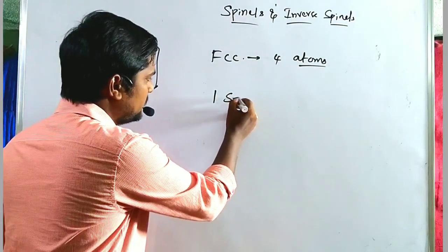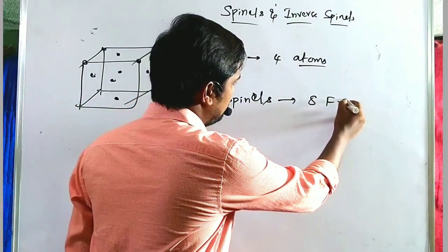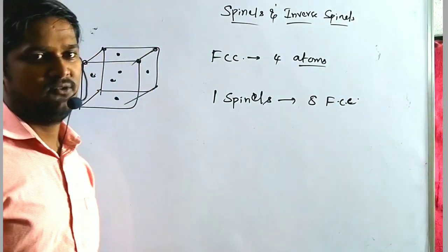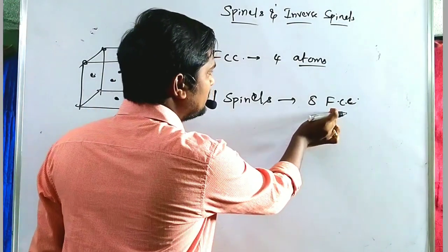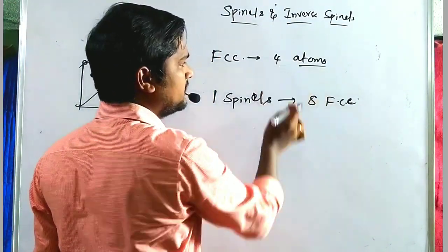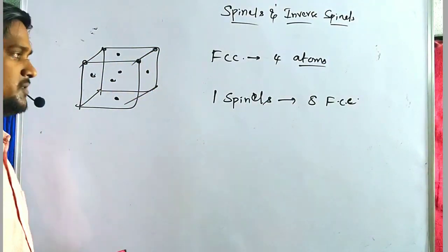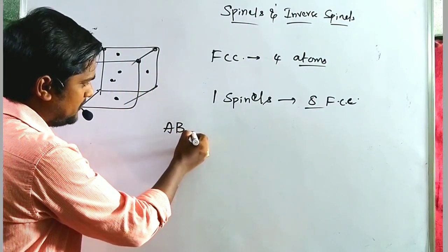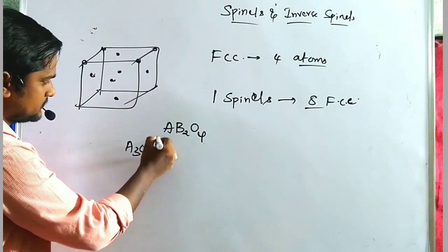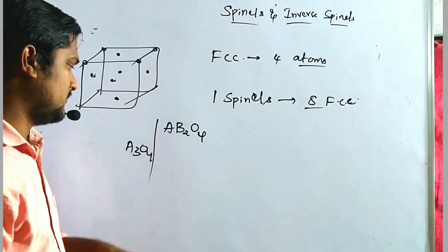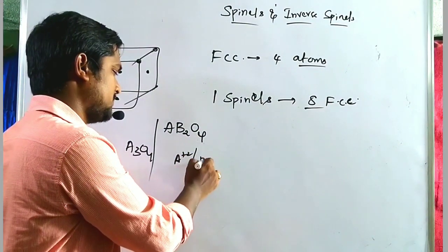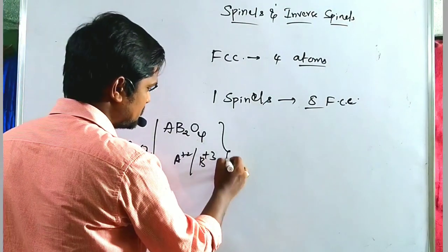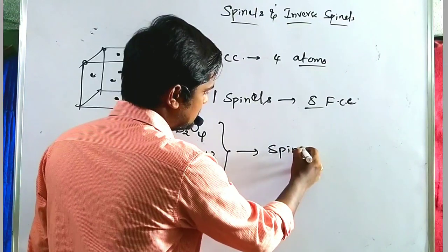One spinel forms from 8 FCC units. Eight FCC units have 8 × 4 = 32 atoms. The general representation of a spinel is AB₂O₄ or A₃O₄, where one metal is in the +2 oxidation state and another is in the +3 oxidation state. Such structures are called normal spinels or general spinels.